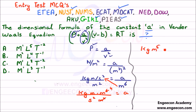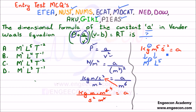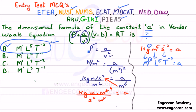The meter² cancels, leaving kilogram·meter⁵·second⁻² equal to A. Converting into dimension symbols, A equals M¹L⁵T⁻². So option A is the right answer. This detailed explanation shows the method; otherwise you can solve it in 40 seconds.